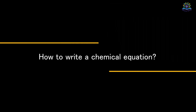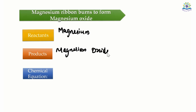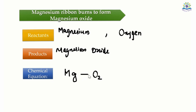Now let me show you how to write a chemical equation. Let's take the reaction: magnesium ribbon burns to form magnesium oxide. Here, one of the reactants is definitely magnesium ribbon, and the other reactant is oxygen, because oxygen supports burning. So let's write the equation. First, we will write the symbol for magnesium, Mg. Now we will write the symbol for oxygen, O2. Since they both are reacting with each other, we will connect them with a plus symbol. The product formed here is magnesium oxide, MgO. Now we can connect the reactants and product with the arrow symbol.